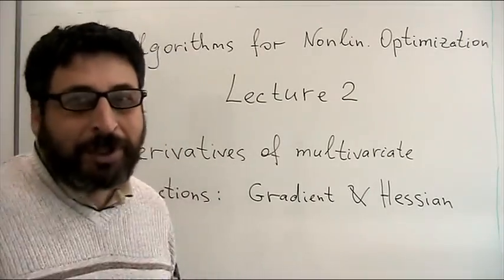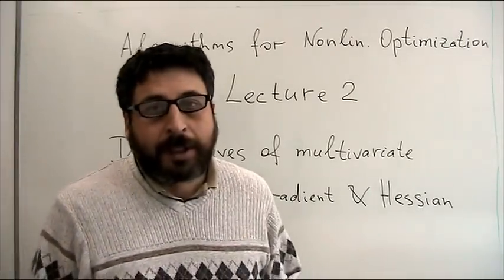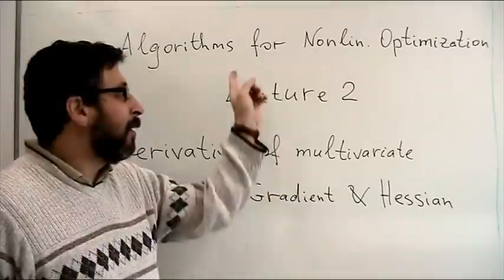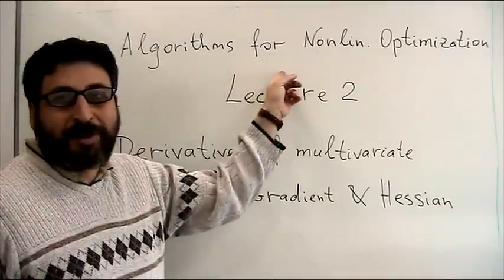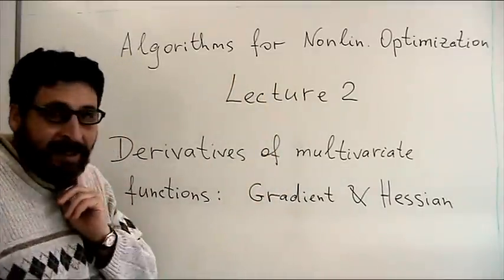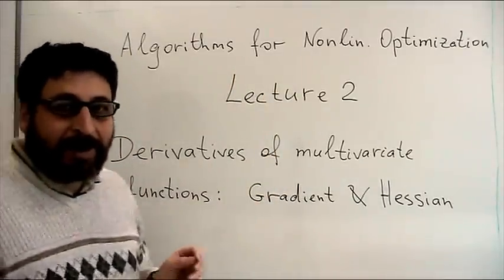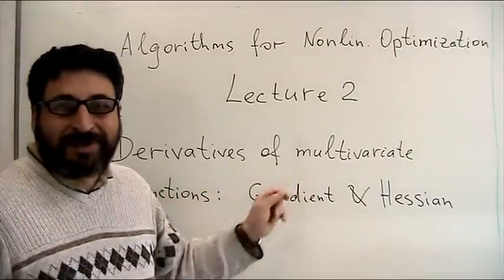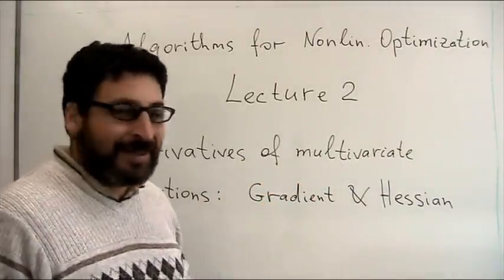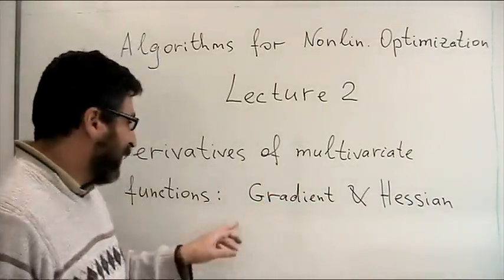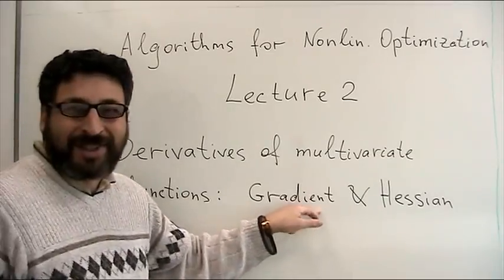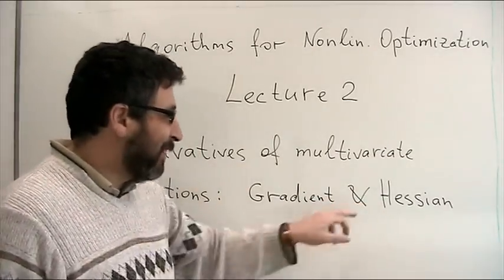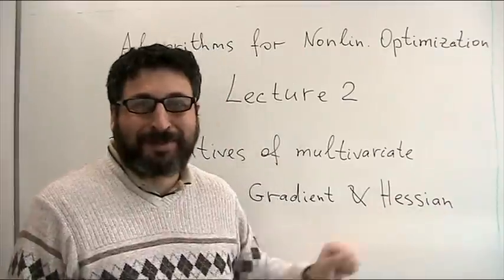Good morning. Today is the second lecture of our optimization course and it will be dedicated to derivatives of multivariate functions: first derivative, the gradient vector, and the second derivative, the Hessian matrix.